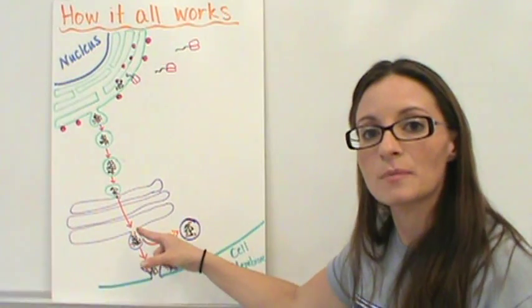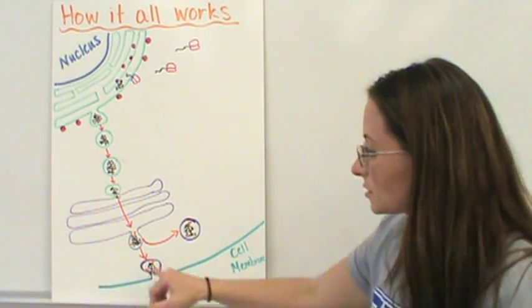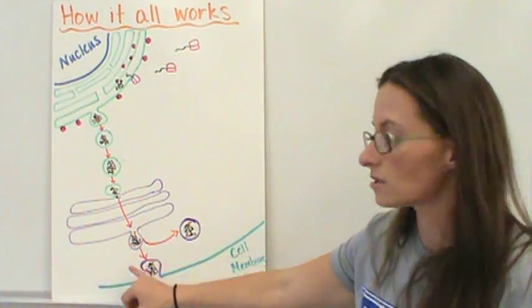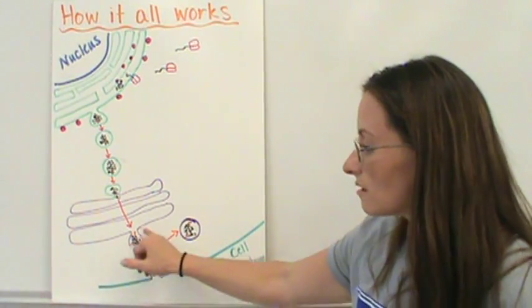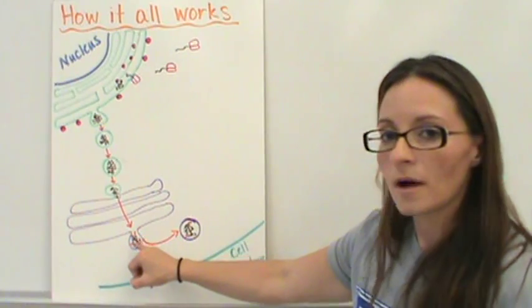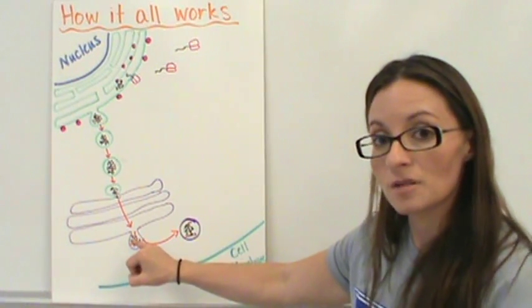Inside the Golgi apparatus, that protein gets modified a little bit. And you'll notice here, I have a few little carbohydrate chains attached to this protein. So we have some carbohydrate chains attached to the protein.